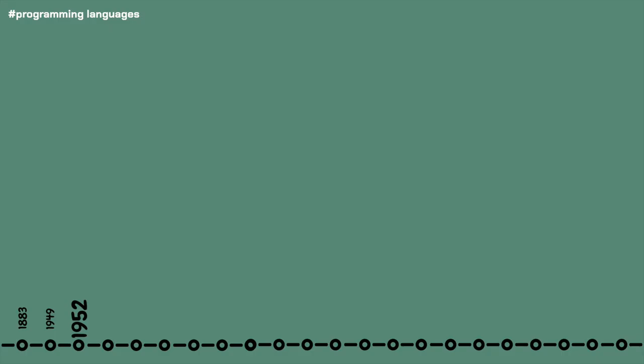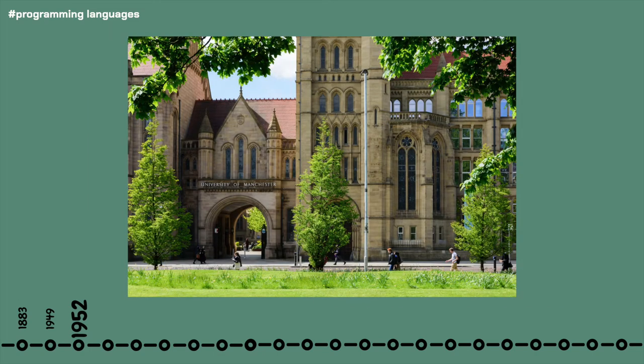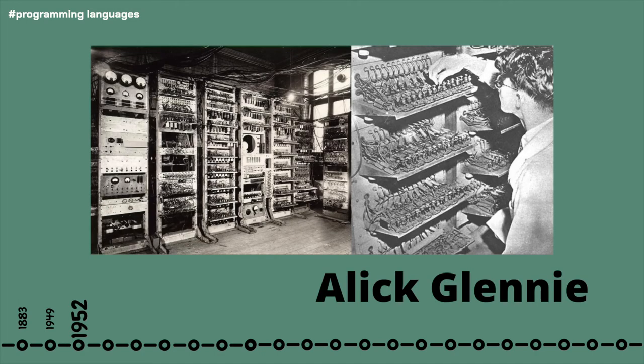1952 comes around with AutoCode. AutoCode wasn't actually a singular programming language, but a term used to describe a family of early computer programming languages. The first of which was developed at the University of Manchester by Alec Glennie for the Manchester Mark I. It is also believed to be the first programming language to run through a compiler.